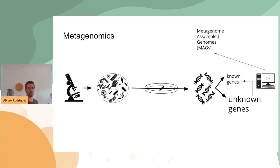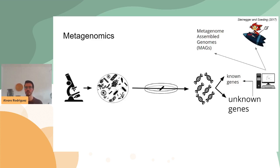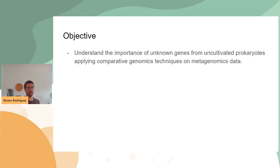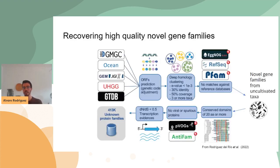This is the case because we can now obtain metagenome-assembled genomes of very high quality, recovering genomes from metagenomic data, and we have tools such as MMseqs2 for building gene families on large metagenomic datasets. So the objective of this work was to understand the importance of these unknown genes from uncultivated species in metagenomic data by applying comparative genomics techniques.